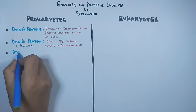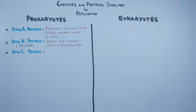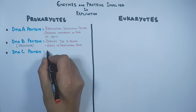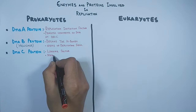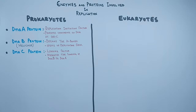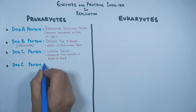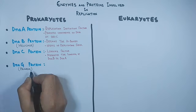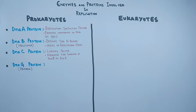Then we have DnaC protein. It must be noted that the previous DnaB helicase enzyme does not attach by itself to the DNA; rather it needs assistance. DnaC protein acts as a loading factor and mediates the loading of the DnaB molecule to DnaA at the oriC site. Now all is open at the oriC site in prokaryotes.